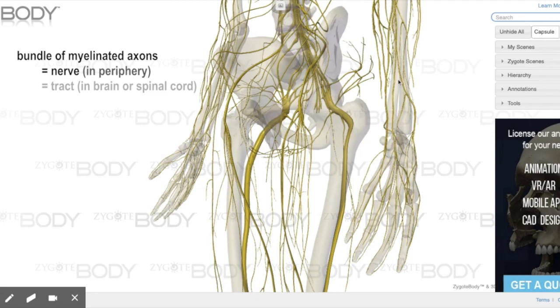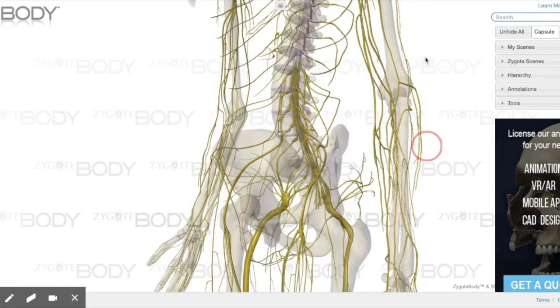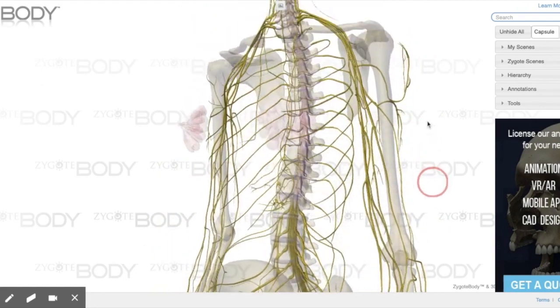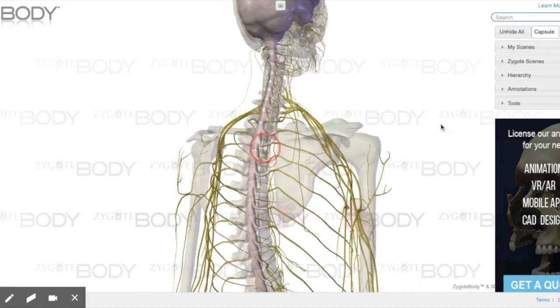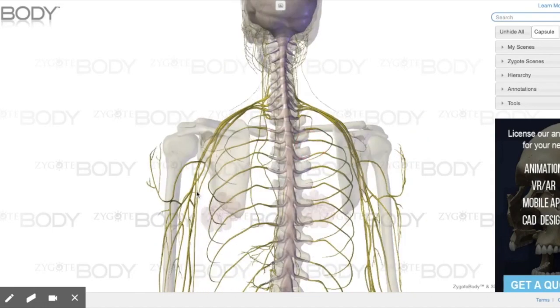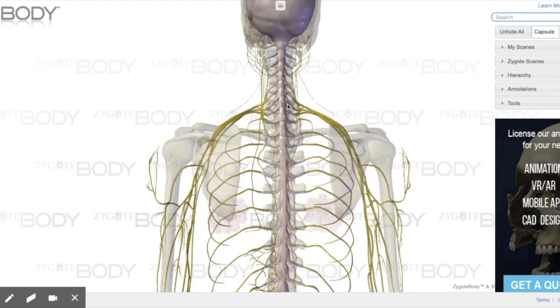As we trace these nerves proximally, you'll see they go up the forearm and up the arm. Eventually, they go through the armpit region right over here. And you even saw that in your cats. And eventually, they terminate at the end of the axons in the cervical region of your spinal cord.